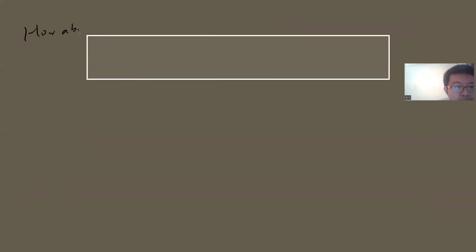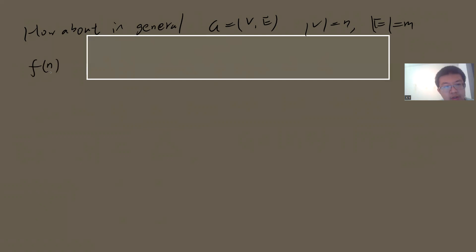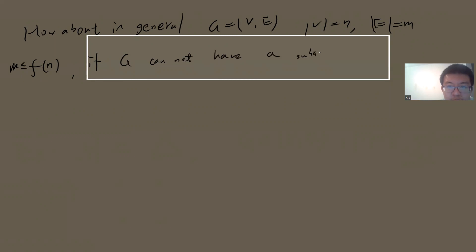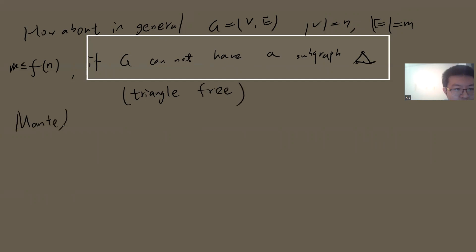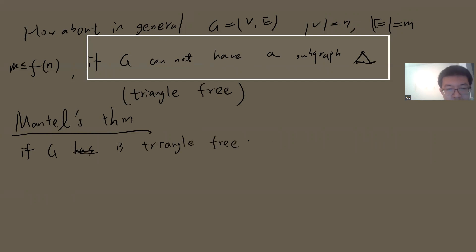How about in general? Let's say G has n vertices and e edges, and I want to know a function f(n) such that e is bounded by f(n) when G cannot have a triangle subgraph. This condition is usually called triangle-free. This is a very old theorem called Mantell's theorem. We will prove that if G is triangle-free, then the maximum number of edges is bounded by n squared divided by four.